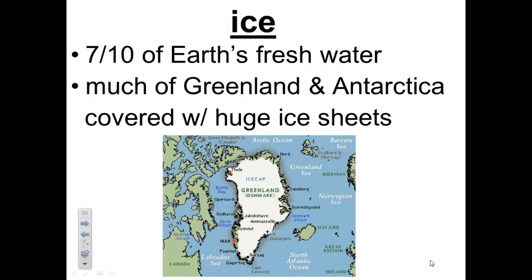About seven-tenths of the Earth's fresh water is frozen into ice. Since most of Earth's fresh water is frozen and far from cities, it is hard for people to use. Much of the Earth's ice is on Greenland and Antarctica, where huge ice sheets cover most of the land. The ice sheets are several kilometers thick in some places. The ice cap at the North Pole floats on the ocean, and there is no land under it.